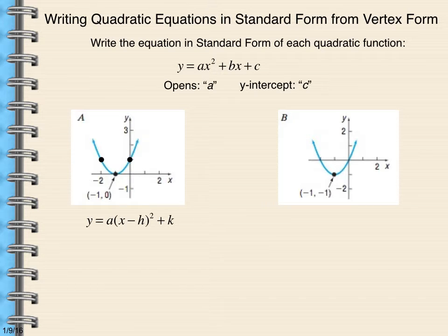My h, k is negative 1, 0. So I can just substitute those values in. This is the equation in vertex form. And I can simplify this. If I wanted to write this particular equation in standard form now, which is the original direction, I can just square out this binomial. So I have x squared plus 2x plus 1. That's the equation in standard form for example a.